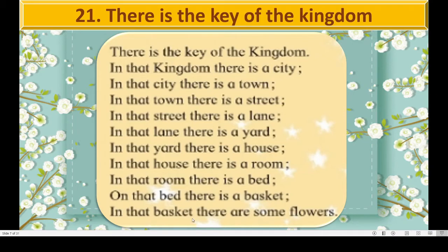This is our poem on page number 44 from the Bala Bharati English textbook. The title is 'There is the Key of the Kingdom.' You know the meaning of key, and kingdom means Desh, Rajya. There is the key of the kingdom. In that kingdom there is a city. In that city there is a town. And in that town there is a street. In that street there is a lane — street means Sadak, and lane means Gully.